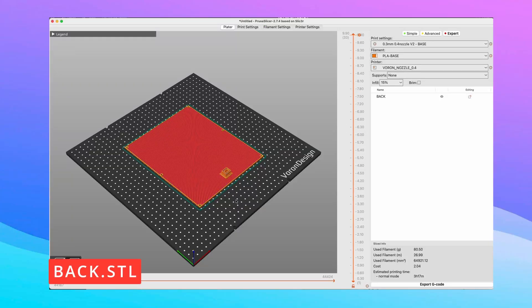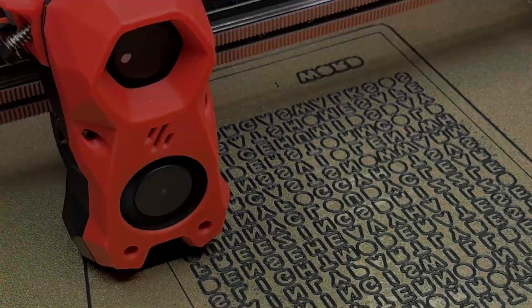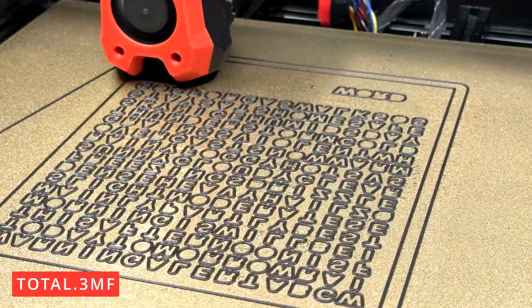Finally, I prepare the file for the back of the box. And now it's time to print using my Boron 2.4 3D printer.